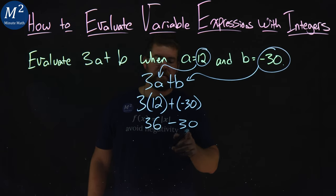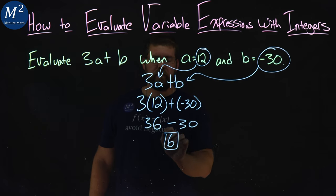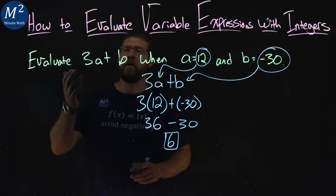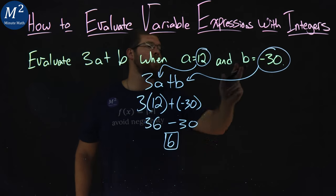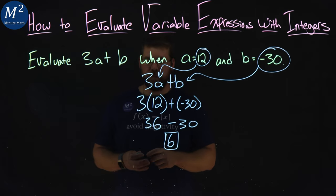Now 36 minus 30 is just 6. And there we have it. We evaluated 3a plus b when a equals 12 and b equals negative 30, and we got 6.